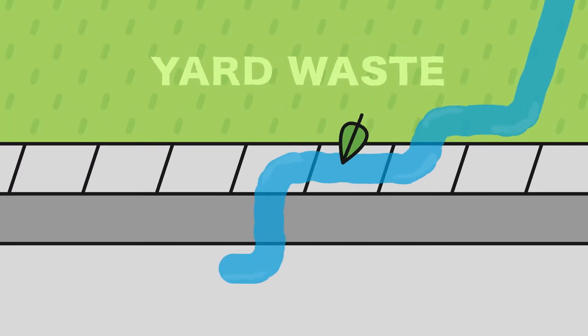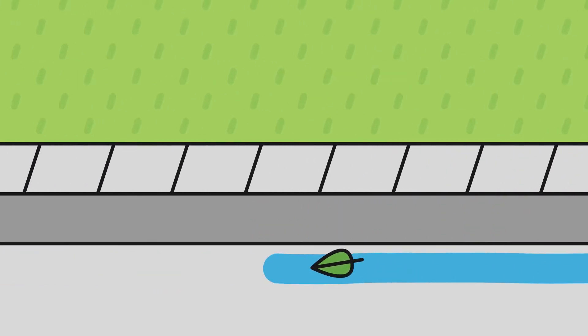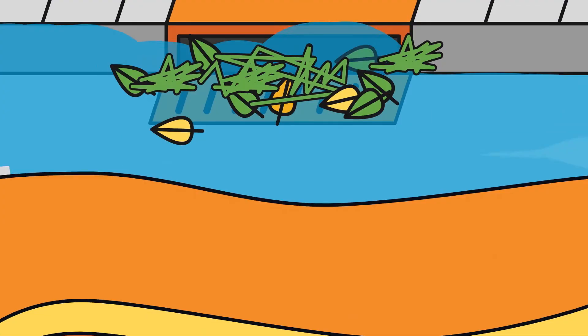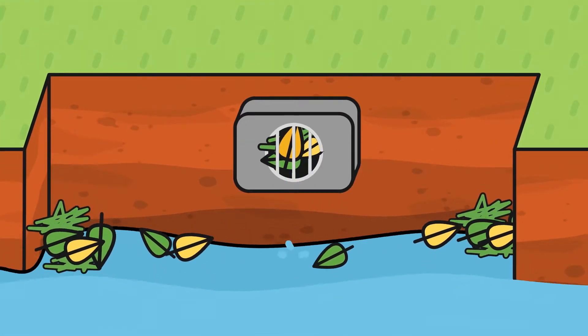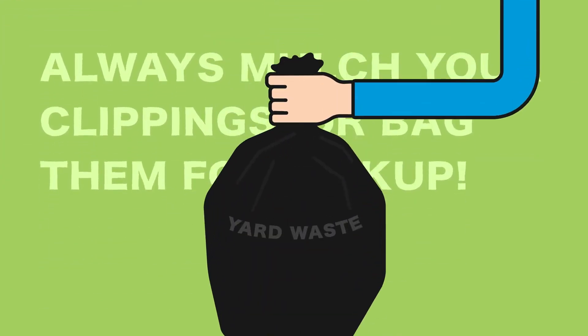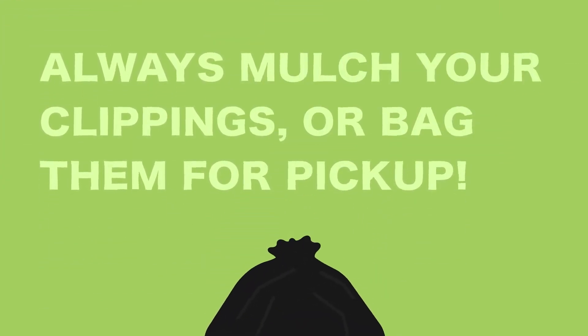Yard waste. Grass clippings, leaves, and other yard waste can clog our storm drains and create serious flooding in your neighborhood. It also creates a mess in the nearest stream or pond where it ends up. Always mulch your clippings back into the lawn or bag them for pickup.